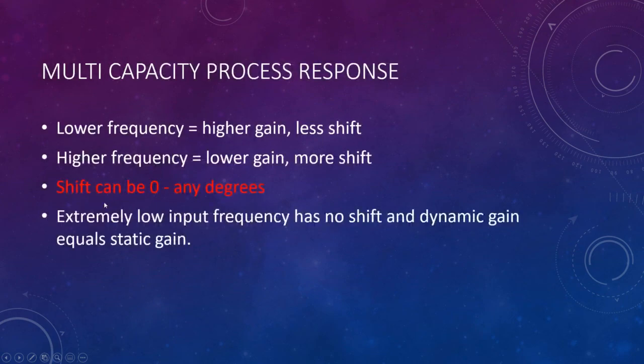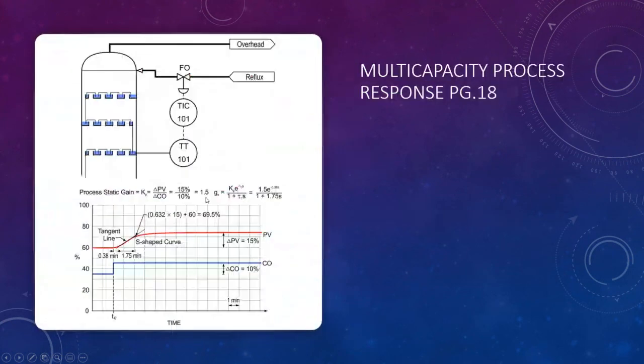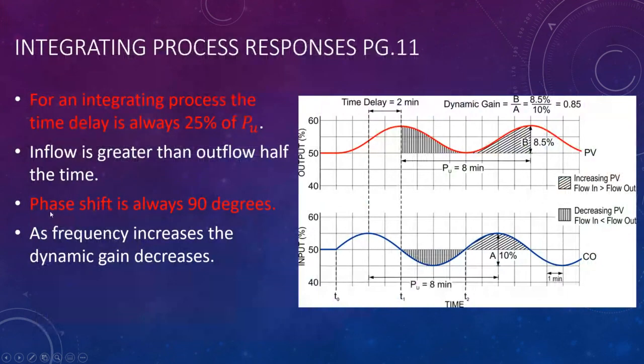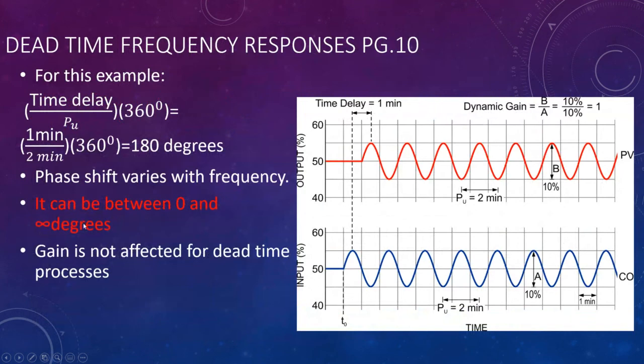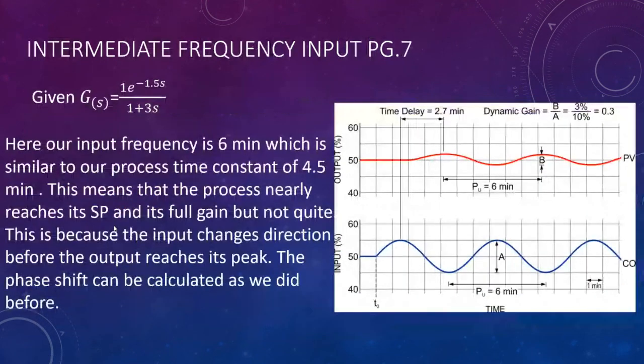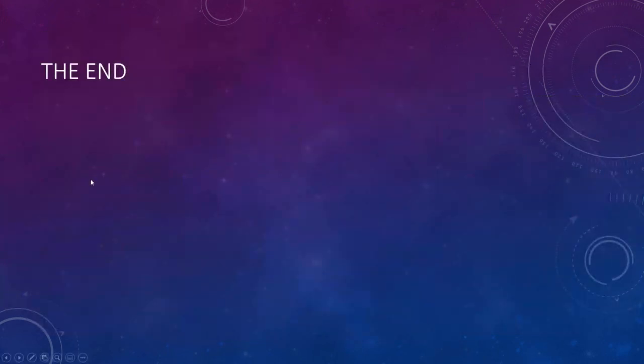To summarize this ILM: frequency increases mean gain goes down and phase shift goes up for most processes — except dead time where gain remains unchanged. The key distinctions are: integrating processes always have 90 degrees of phase shift; dead time processes have phase shift ranging from zero to infinity; and multi-capacity processes have phase shift from zero to any degrees. The main purpose was to explain how input frequency affects the output's ability to keep up. Goodbye.